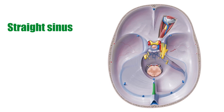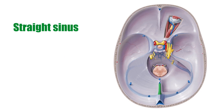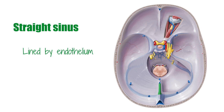The dural venous sinuses are intracranial venous channels that drain venous blood from the brain to the internal jugular vein. These venous channels are located between the layers of the cranial dura mater, and their walls are lined by endothelium. There are six paired and four unpaired dural venous sinuses.